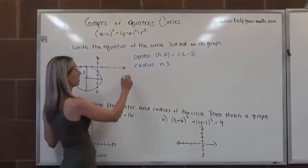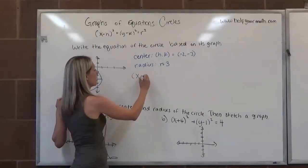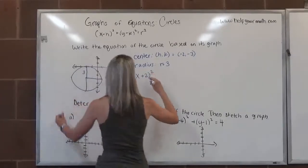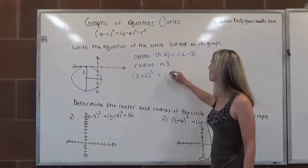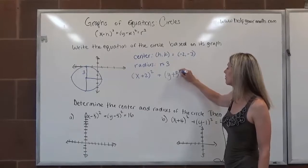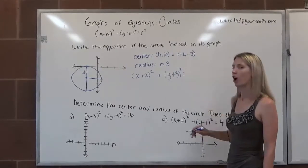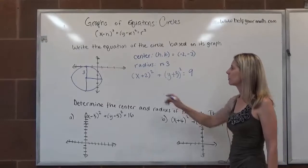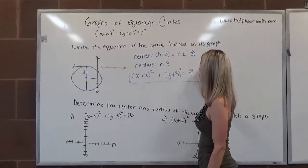Now we're going to plug it into the formula. That would be (x+2)² + (y+3)² = r², which is 9. So that's how we would write the equation if we're given the circle.